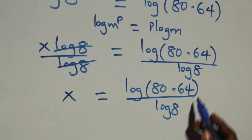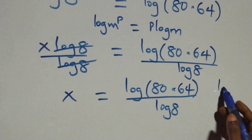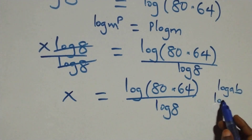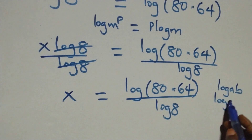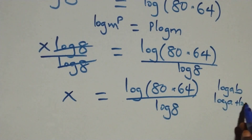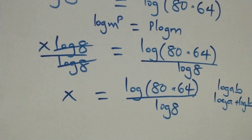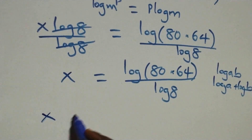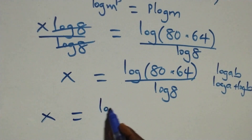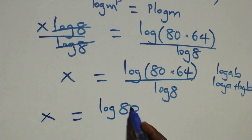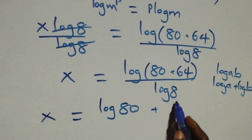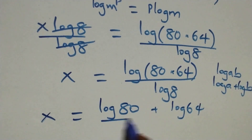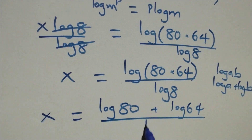Then this follows: when we have log a times b, this is the same thing as log a plus log b. So what we have becomes x equals log 80 plus log 64, all over log 8.